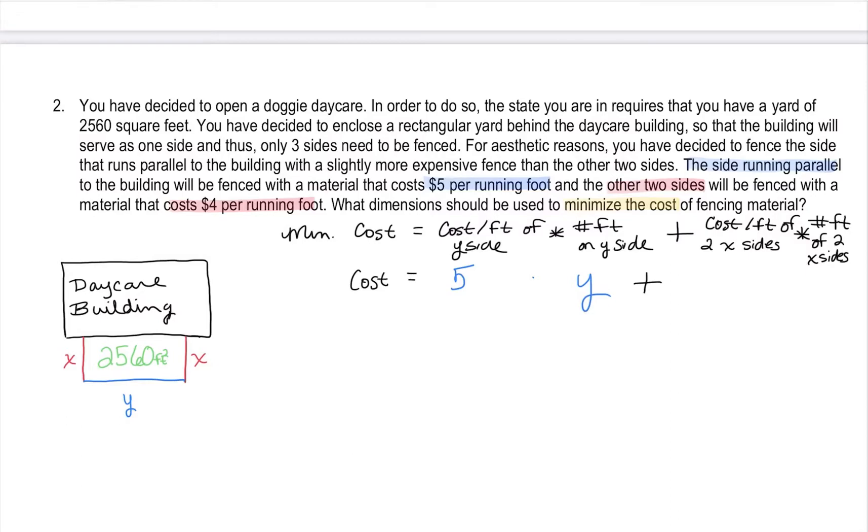And then we want to, so this is what our cost equals. The cost per foot of the two x sides. Well, that's what we've highlighted in red in the paragraph. That is costing us $4 per foot times, now the number of feet, because there are two of those x sides, that's going to be 2x. That is the number of feet. So really in both of these cases, what we're doing is just simply cost per foot times number of feet, cost per foot times number of feet. All right, now here's a good example where when we start off, this is what we would call our primary equation. It is now 5y plus 8x.